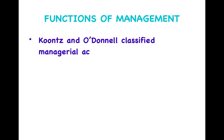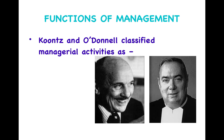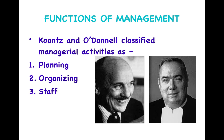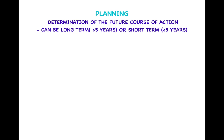Now let's see the different functions of management given by Kuhns and O'Donnell. They have given the following five functions: planning, organizing, staffing, directing, and controlling. Now let's understand what exactly each of these five functions of management means in a little more detail.